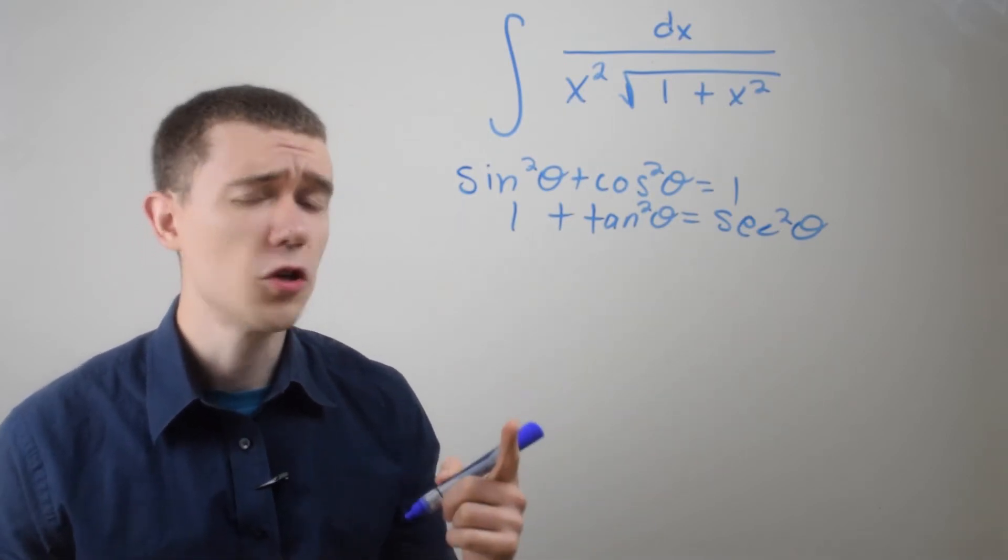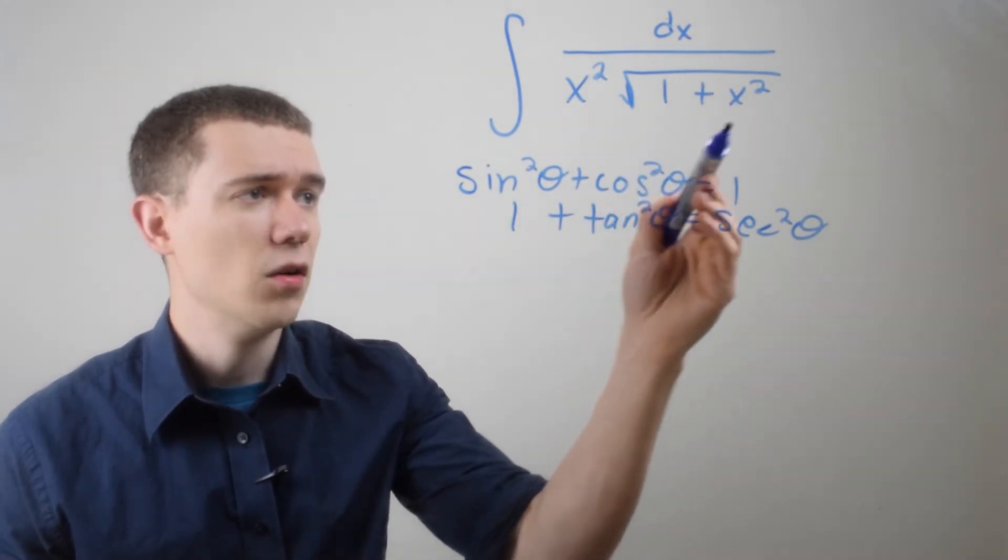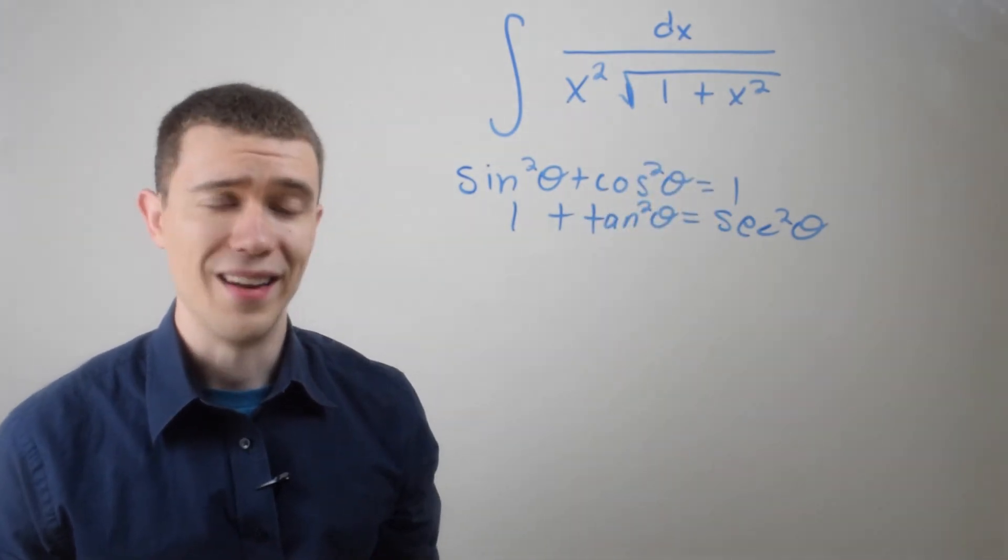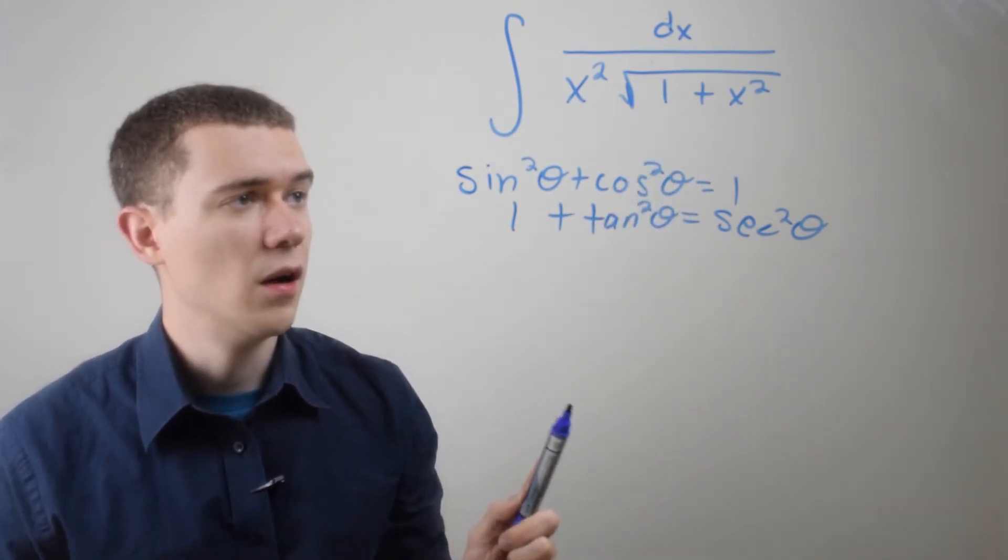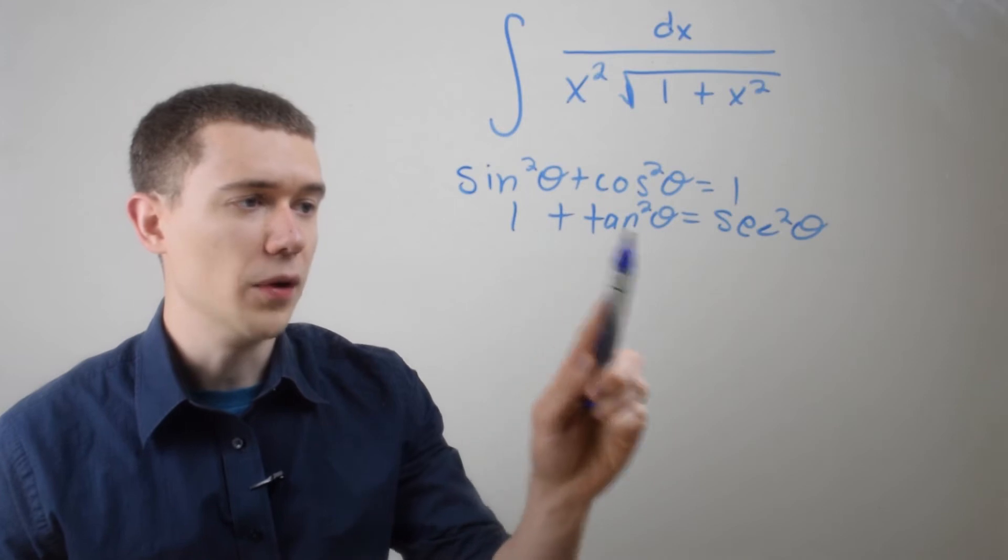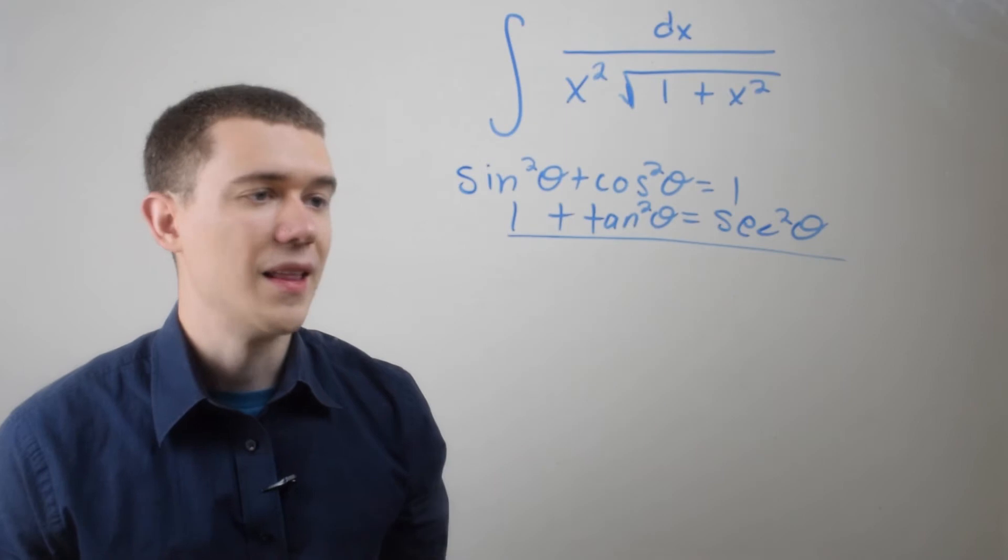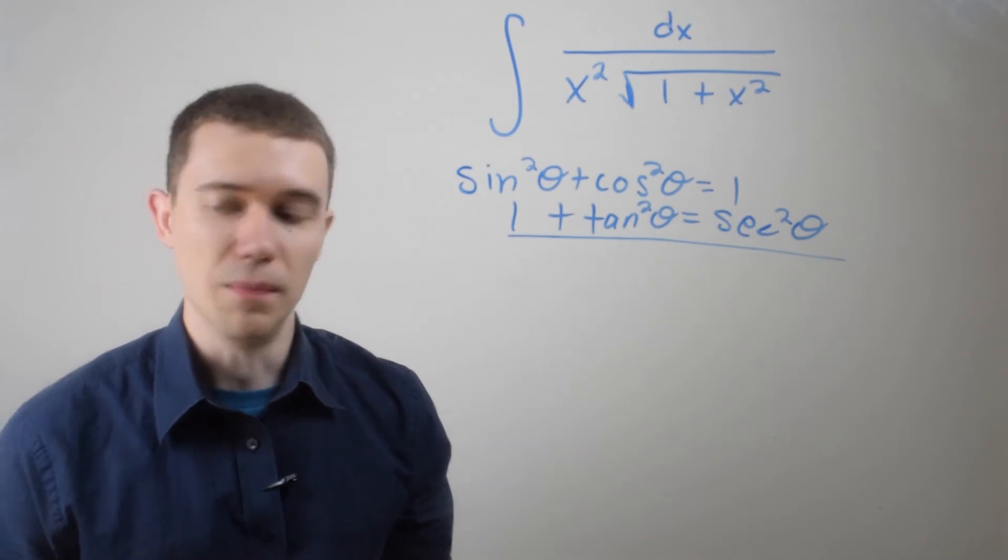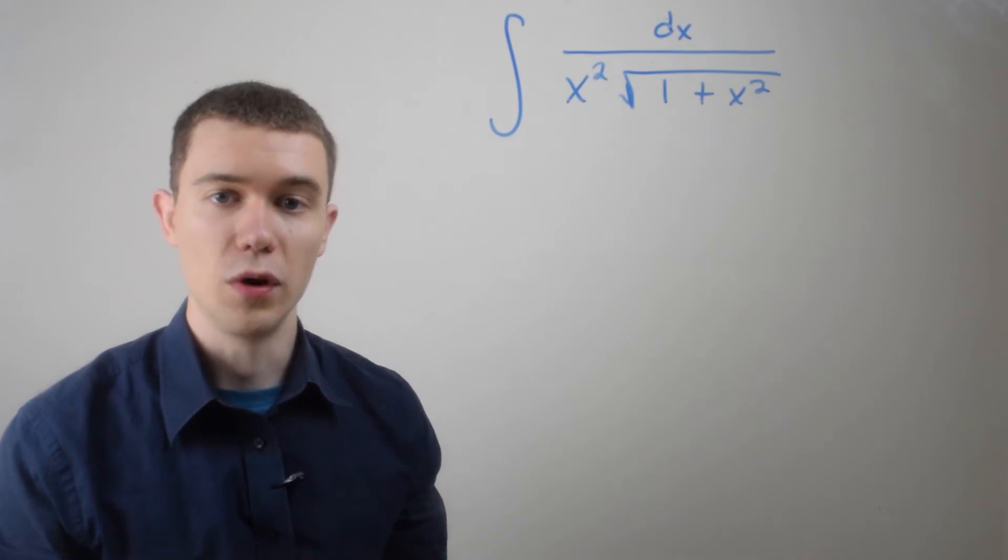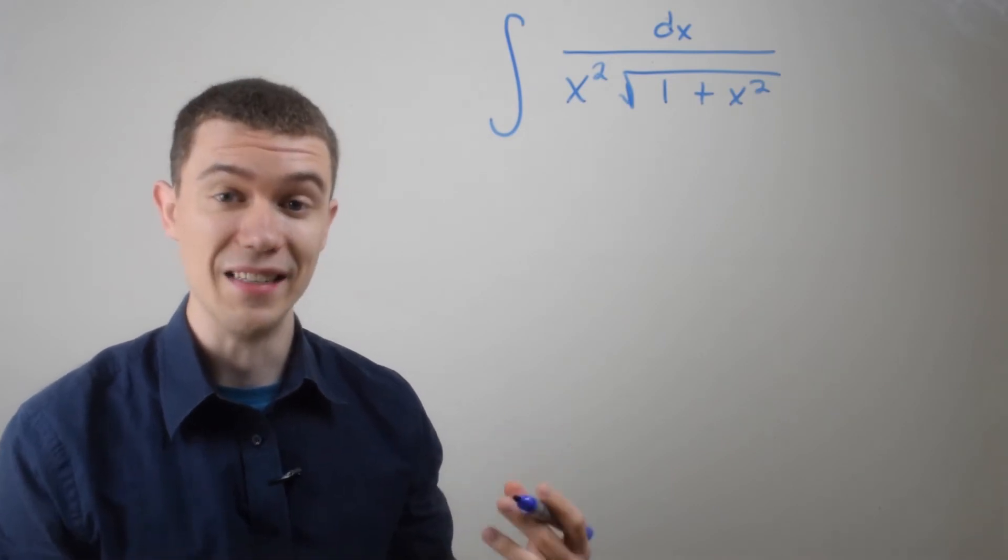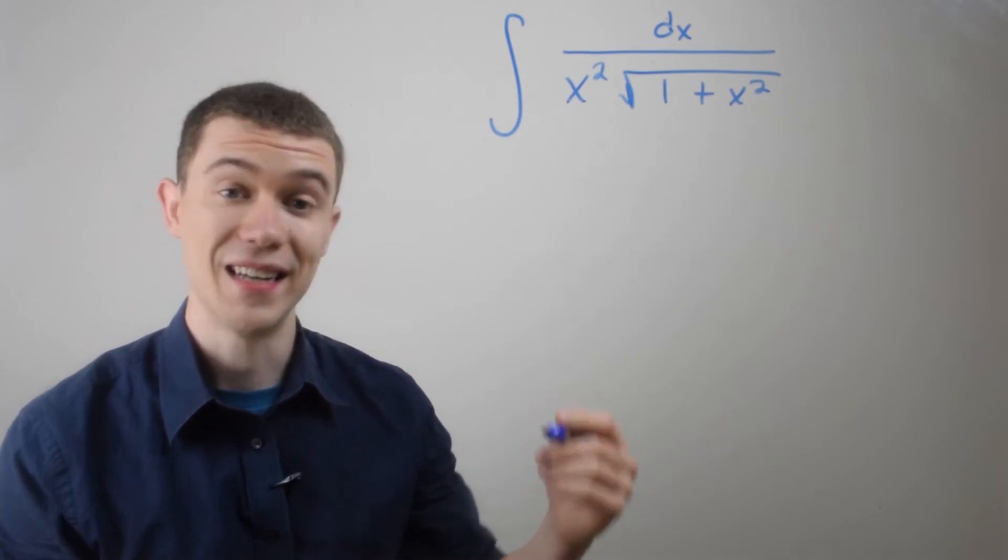So my question to you is, which one of these identities kind of looks like what's inside the square root? And to me, it sure looks like 1 plus x squared looks a lot more like 1 plus tan squared theta. So I'm going to be using this identity in this problem. Okay? So knowing what identity I'm going for is going to make my job a lot easier.